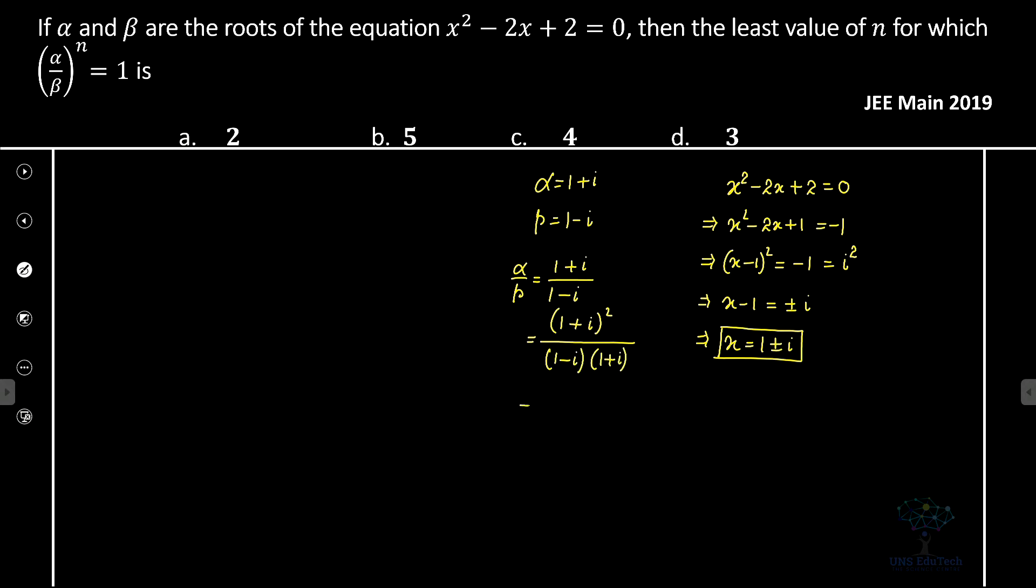Expanding: the numerator is 1 + i² + 2i = 2i, divided by the denominator 1 - i² = 2, which gives us 2i/2 = i. Therefore, (α/β)ⁿ = 1 implies that iⁿ = 1.